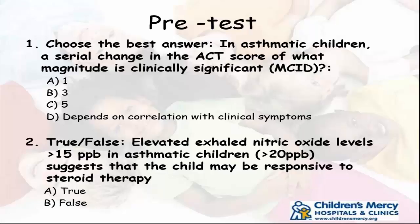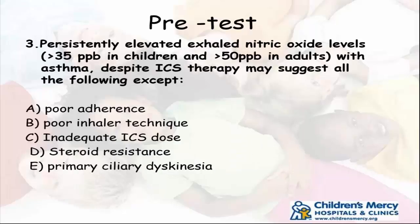The next question: you have ENO levels and you're looking at elevated ENO more than 15 parts per billion — does that indicate the child may be responsive to steroid therapy? The third question: if the level is more than 35 parts per billion in children, and more than 50 parts per billion in adults with asthma despite therapy, what are you thinking? Poor adherence, poor inhaler technique, inadequate ICS dose, steroid resistance, primary ciliary dyskinesia — it's an 'all of the following except' question.